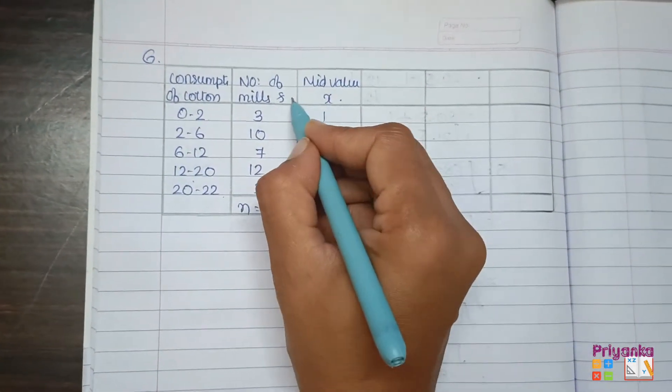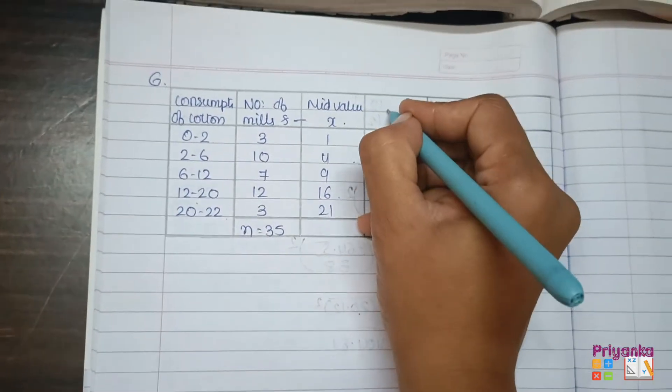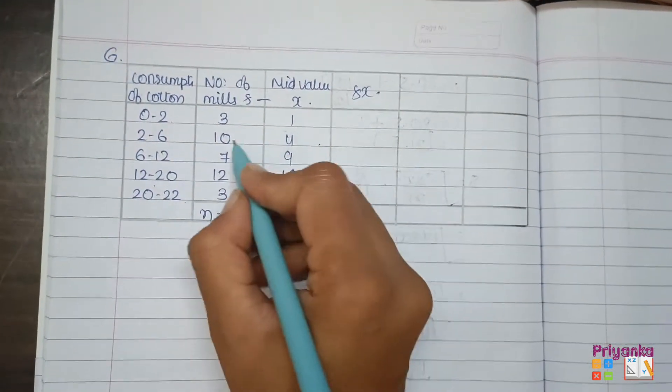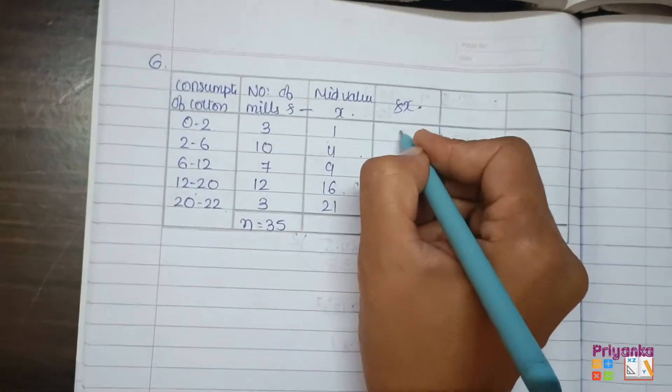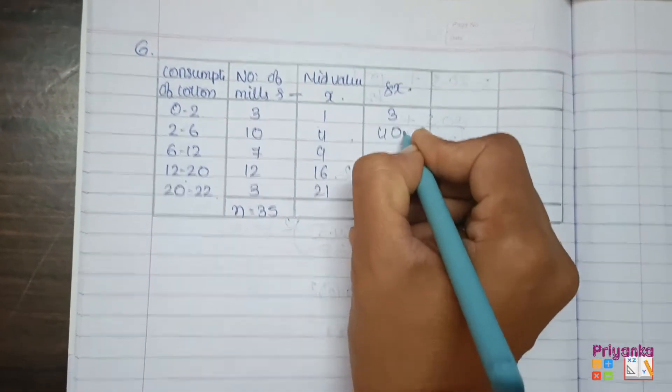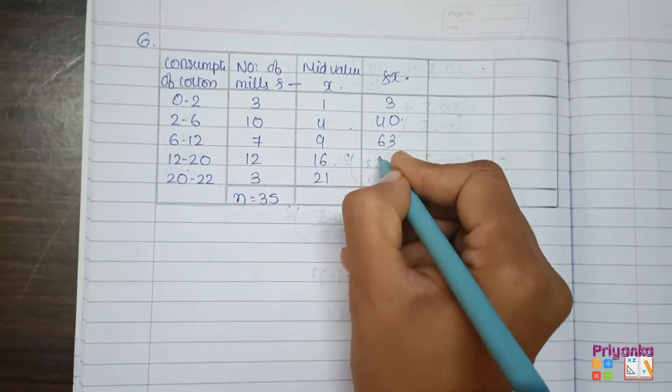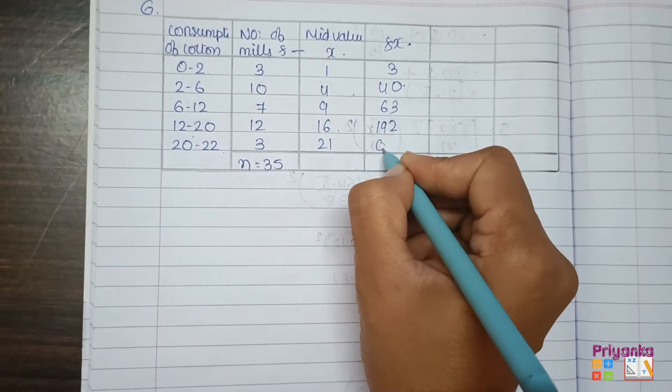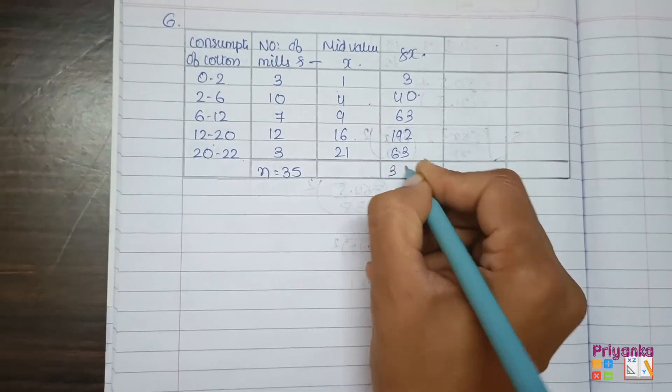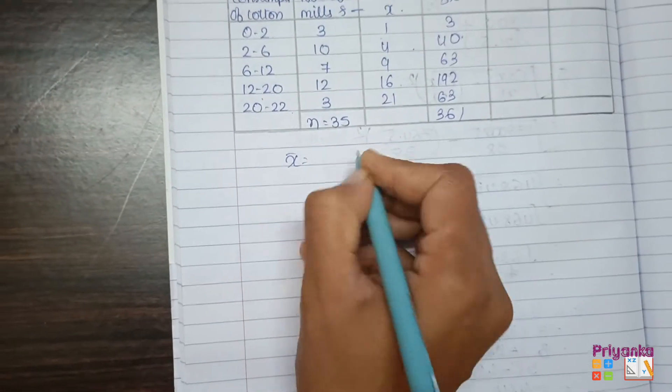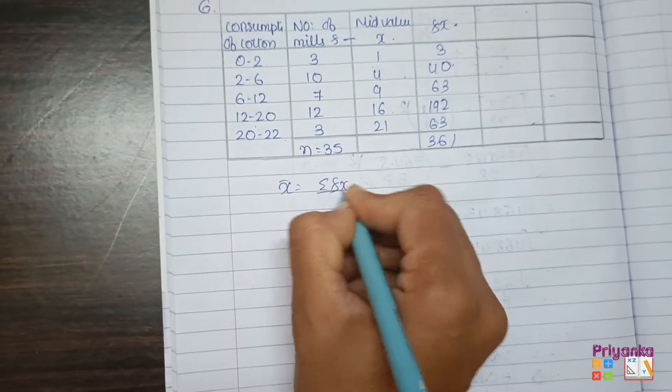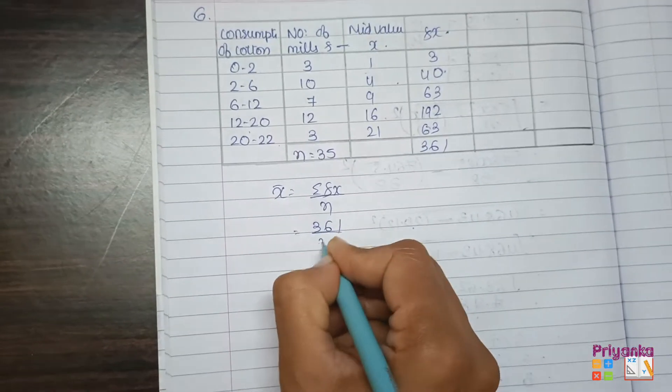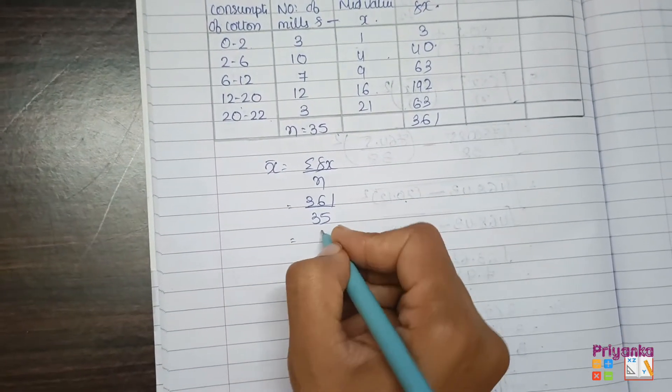After finding mid value, our first step is to find out mean. For this, multiply these two columns. Three ones are three, ten fours are forty, seven nines are sixty-three, twelve into sixteen is one ninety-two, and three into twenty-one will be sixty-three. The total is three sixty-one. So first step, find out mean, that is sigma fx upon n: three sixty-one divided by thirty-five, and here we find out the mean 10.31.